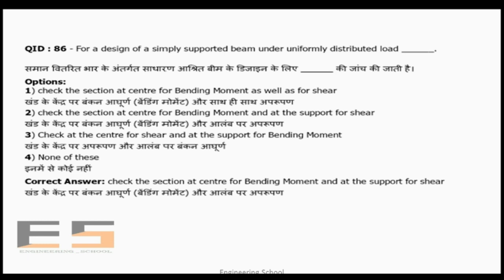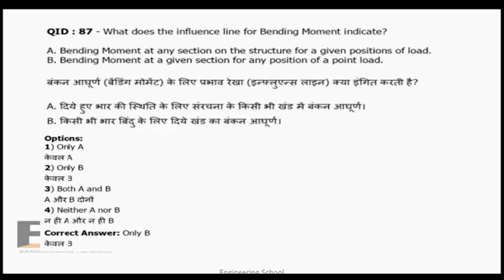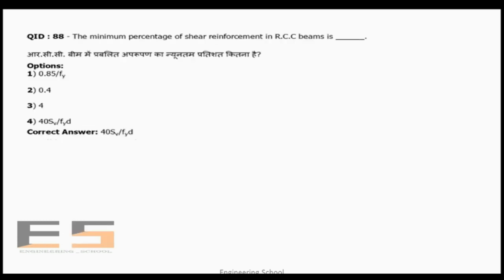Question 87: The influence line for bending moment indicates the bending moment at a given section for any position of a point load. Option B is correct — the ILD is drawn with reference to a point load at different positions.